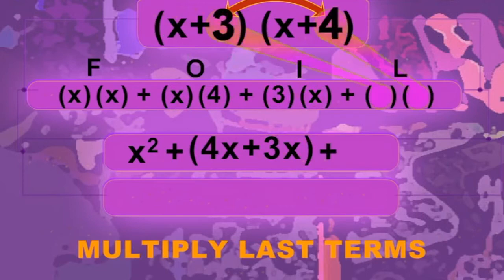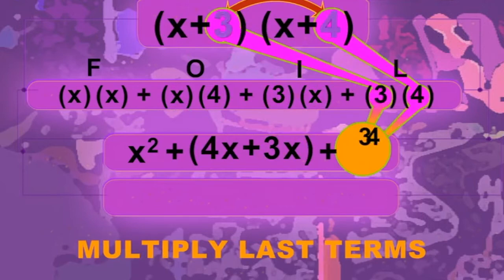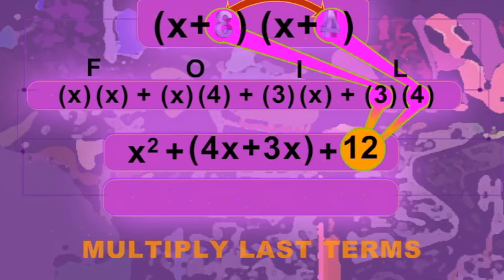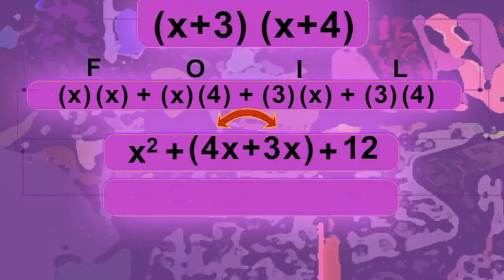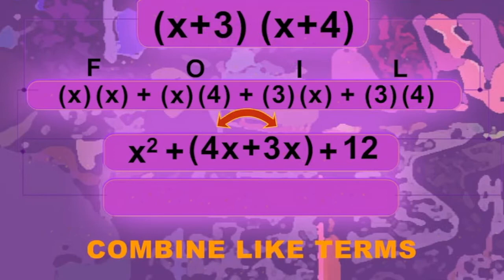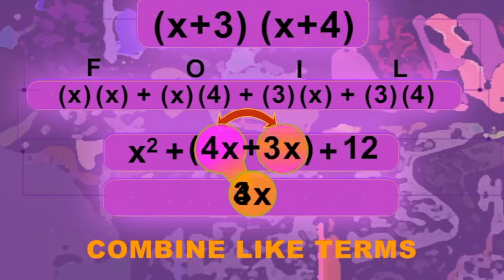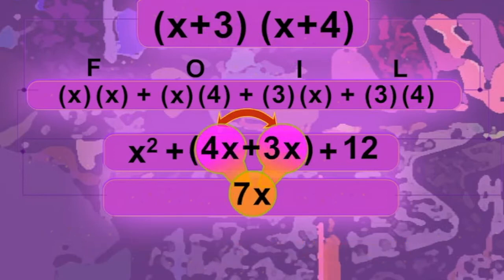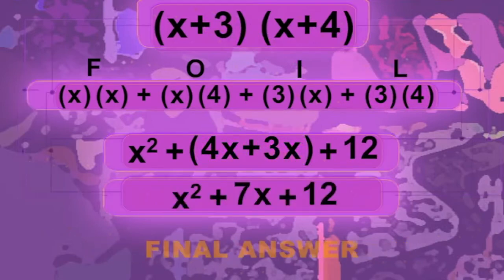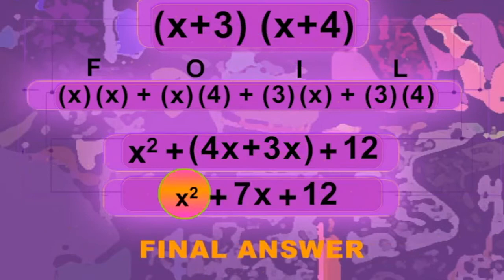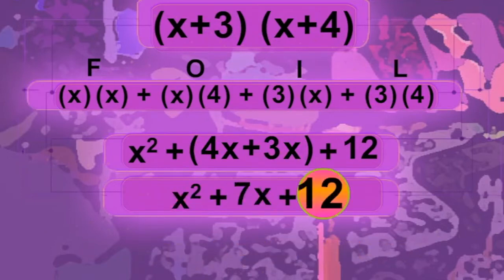Last, multiply the last two terms: 3 times 4 equals 12. Combine the like terms: 4X plus 3X equals 7X. The final answer is X squared plus 7X plus 12.